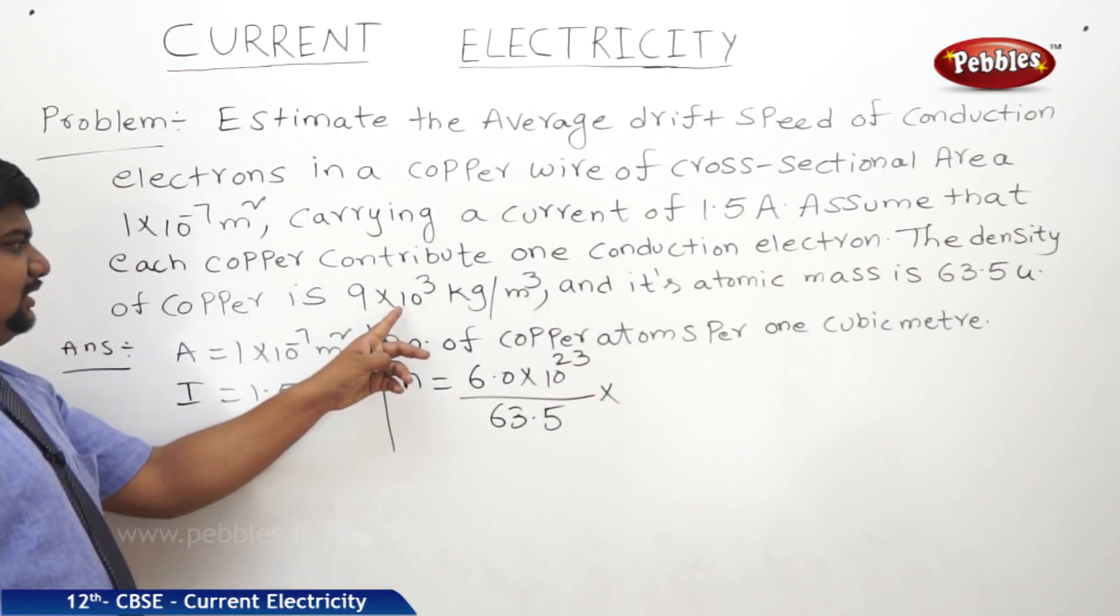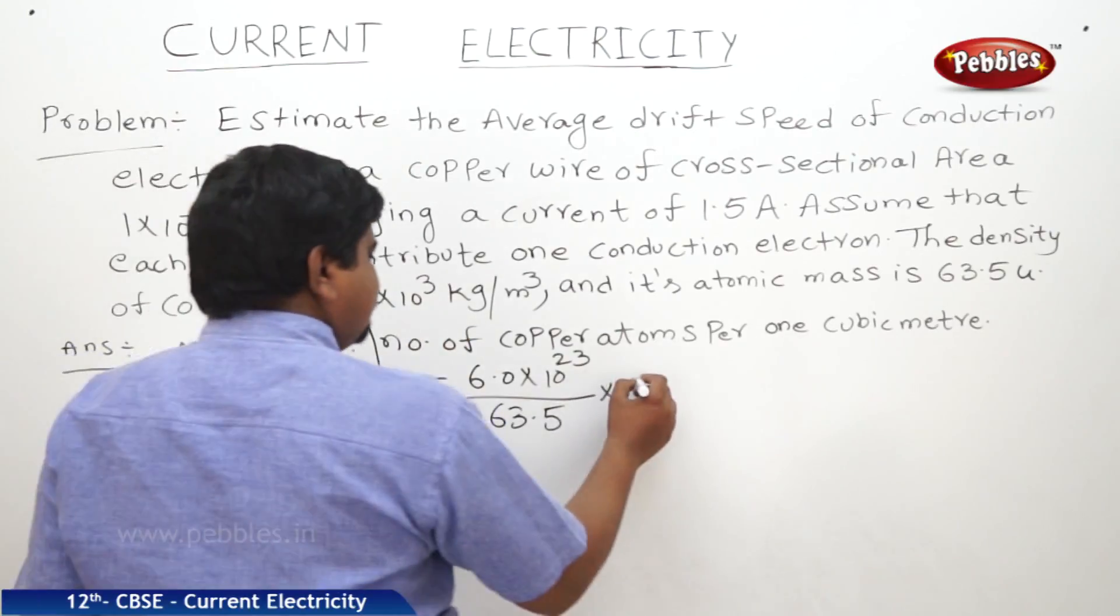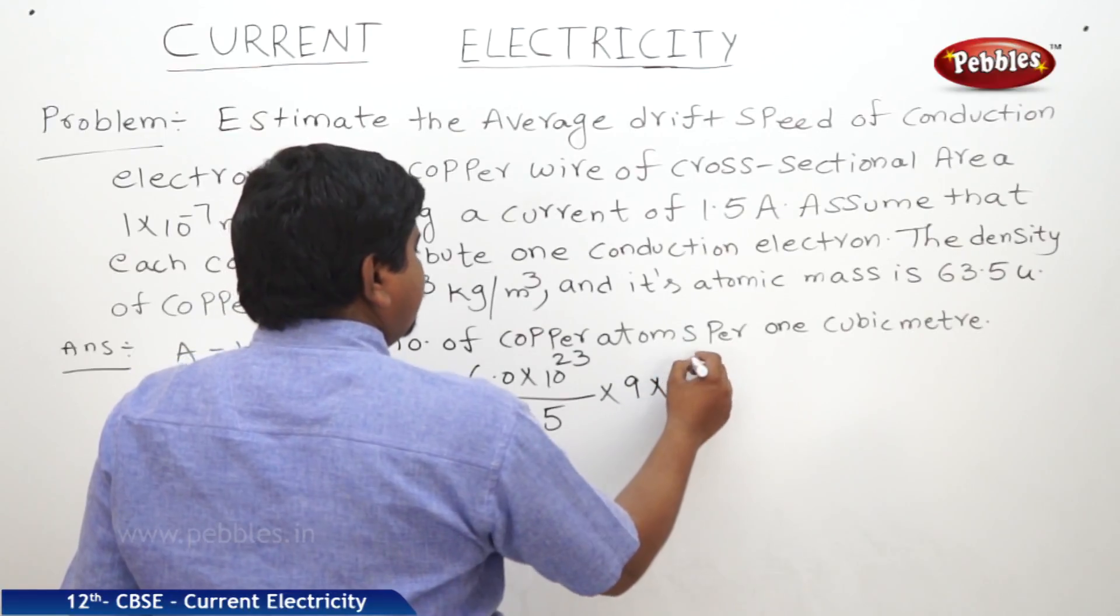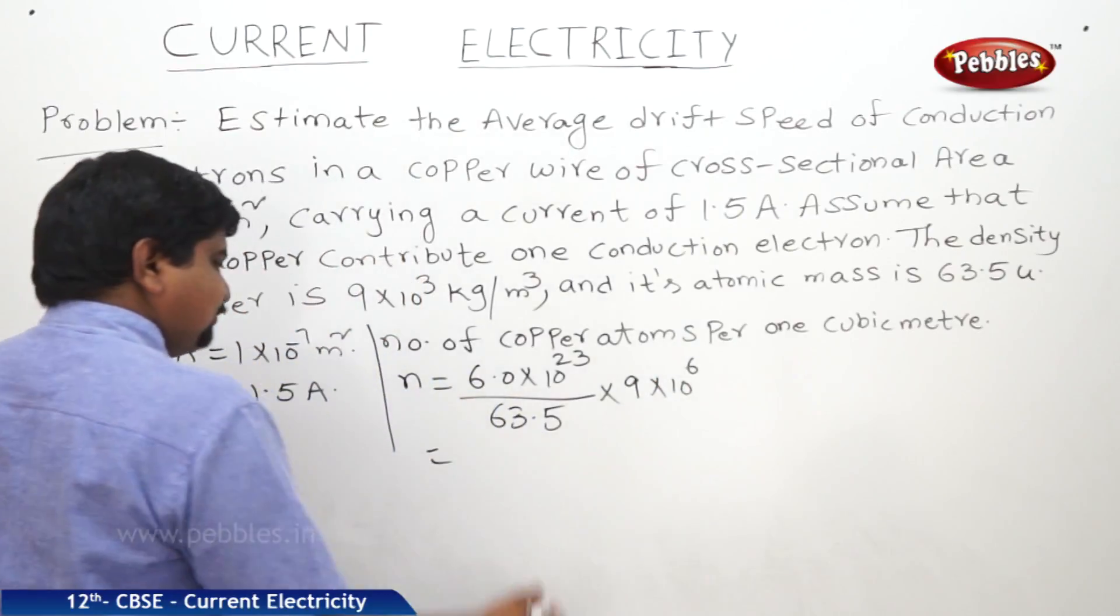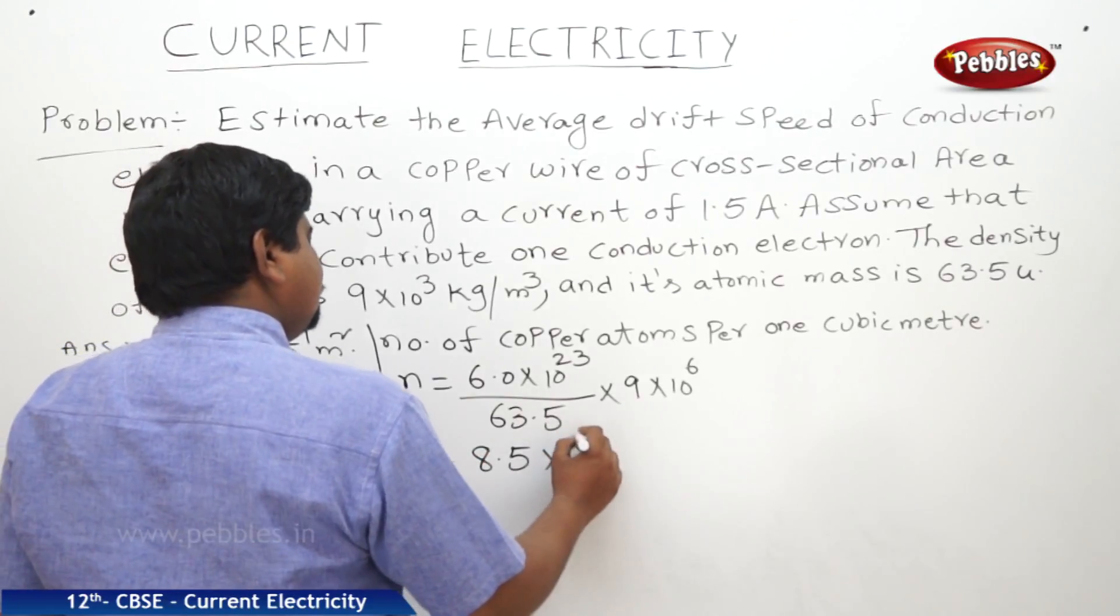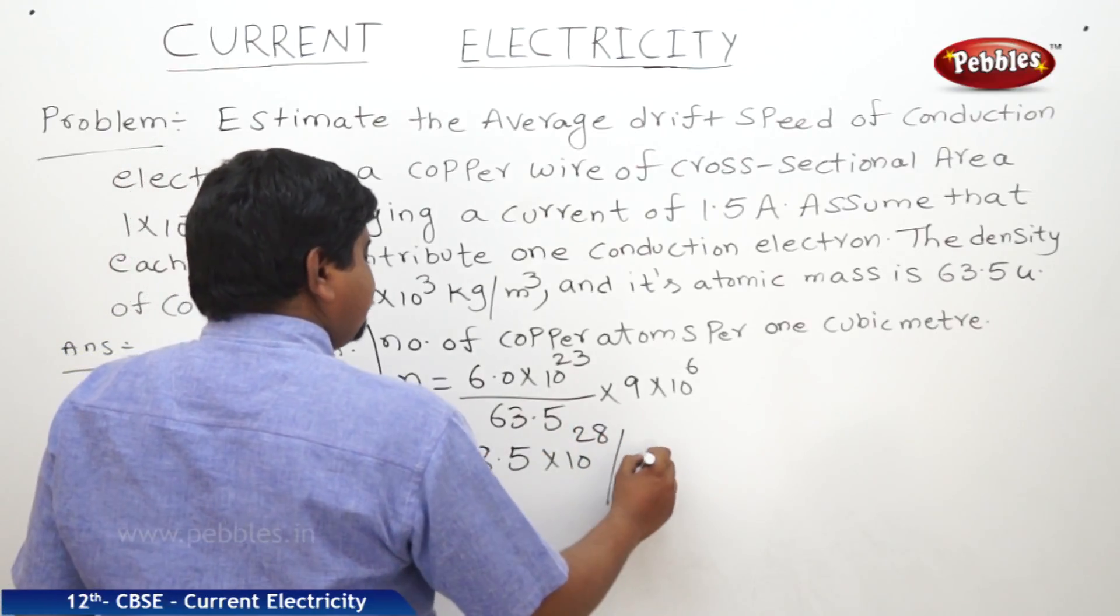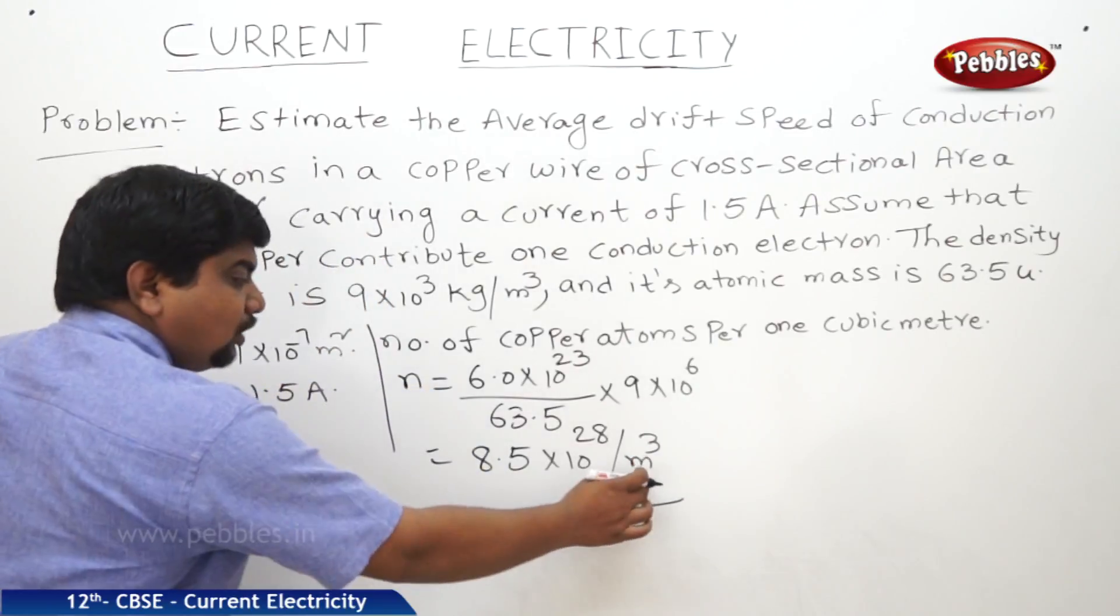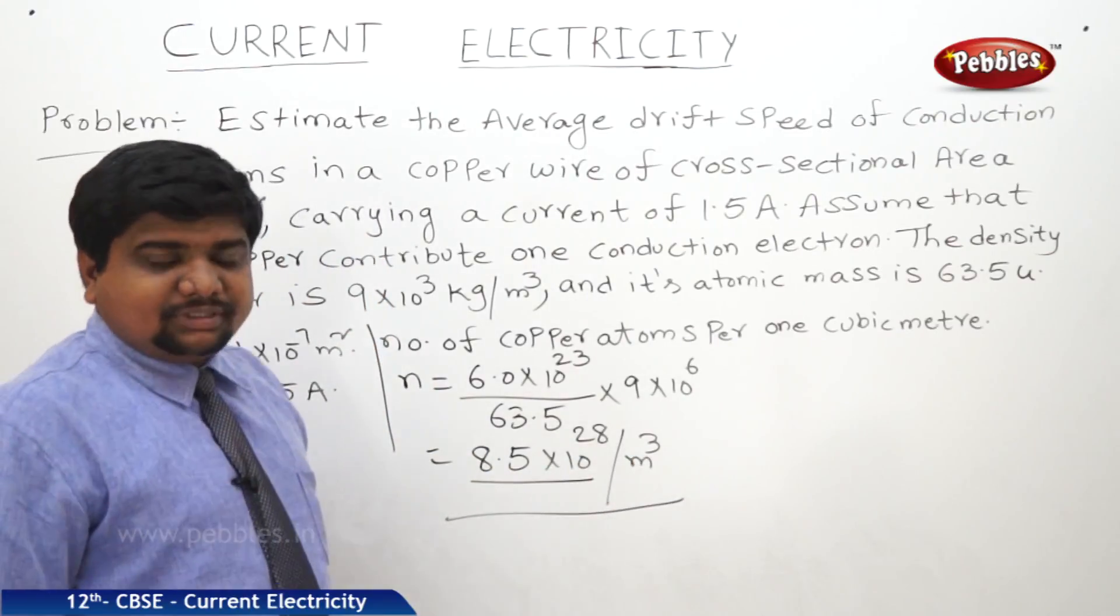and I am converting the density also into grams, nothing but 9 into 10 to the power of 6. The answer is 8.5 into 10 to the power of 28 per meter cube. Per one cubic meter, these many atoms are present in copper.